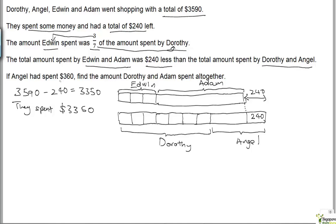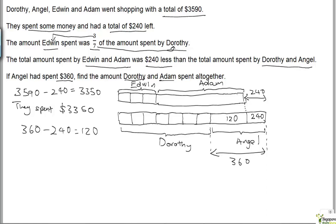If Angel had spent $360, find the amount that Dorothy and Adam spent altogether. This whole box here is Angel. If Angel spent $360, then $360 minus $240 equals $120. So this section here equals $120.